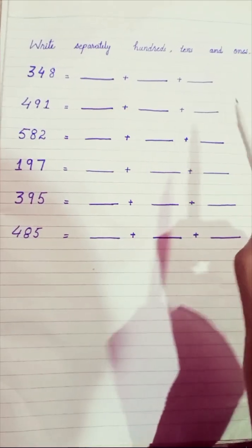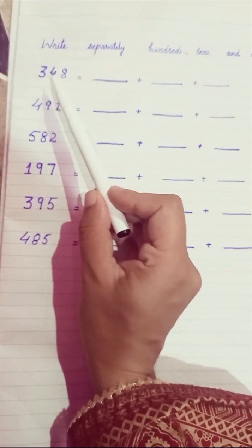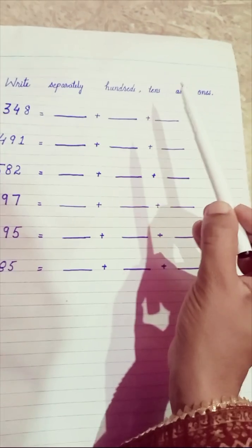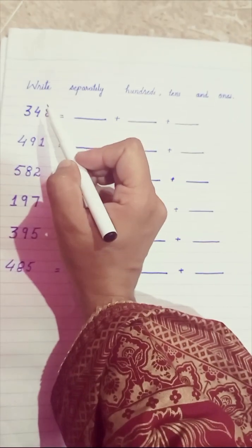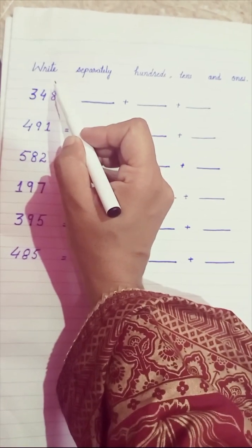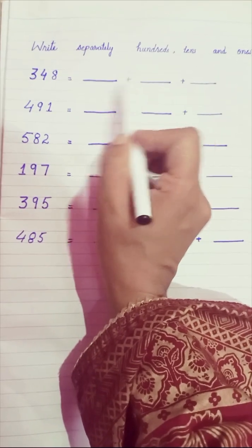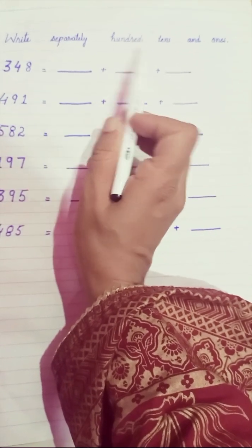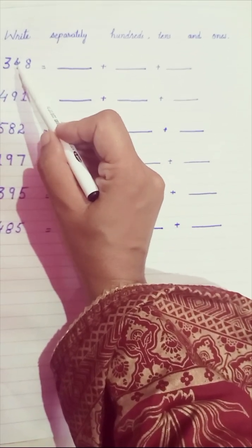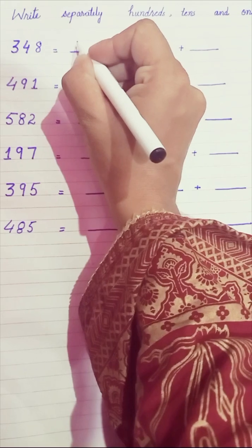First we will see the first number: this is three hundred and forty-eight. We will look at the place values using the format of hundreds, tens, and ones. Eight is in the place of ones, four is in the place of tens, and three is in the place of hundreds. So we have to write them separately in the blanks.